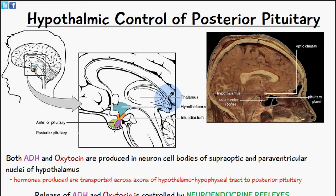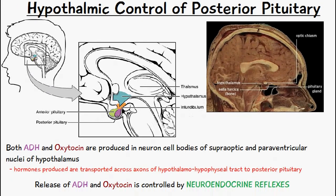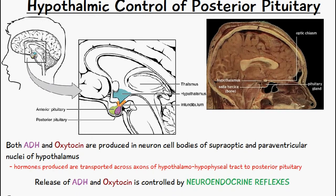Welcome to Five Minute School. In today's video we're going to be talking about the hypothalamic control of the posterior pituitary gland. We've mentioned from previous videos that the hormones ADH and oxytocin are secreted from the posterior pituitary gland, but they are produced in the hypothalamus. Both ADH and oxytocin are produced in neuron cell bodies